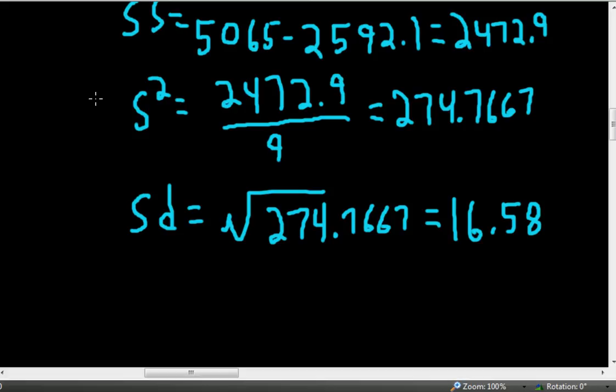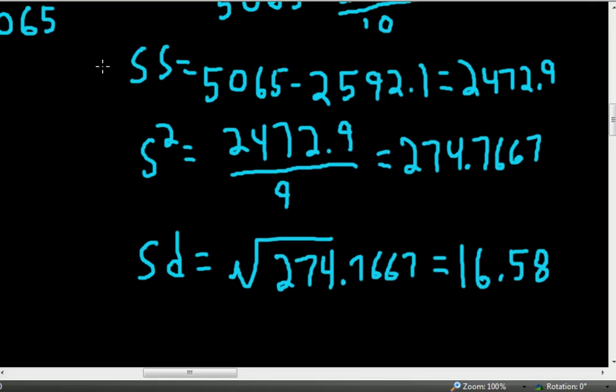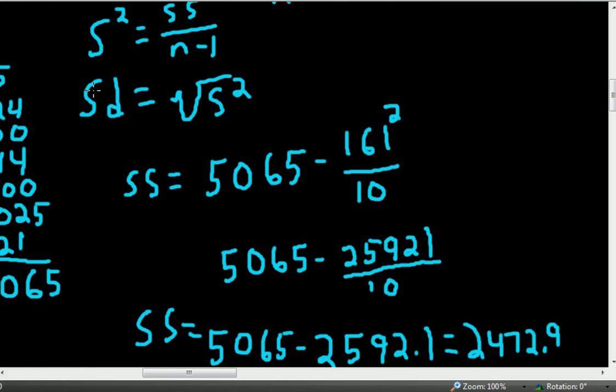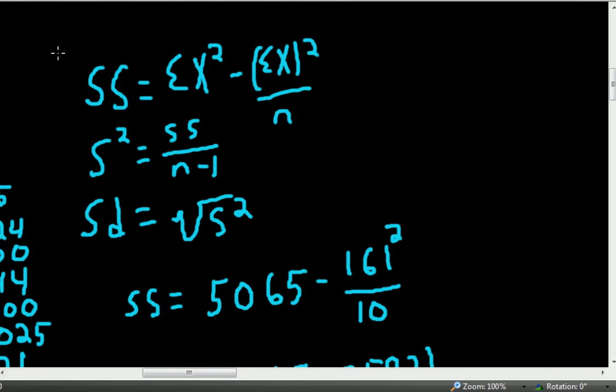by way of the variance and the sum of the square deviations from the mean using the computational formula. So using these formulas here, we are able to compute that. So that gives us an approximation of how much we might expect a given score to deviate from the mean for this set of scores.